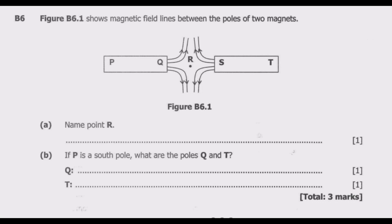In the previous episode we covered equation 5 extensively. Let us now focus on question B6. Figure B6.1 shows magnetic field lines between the poles of two magnets.